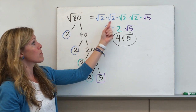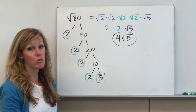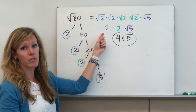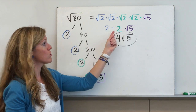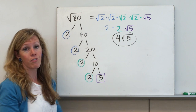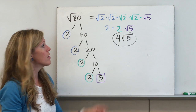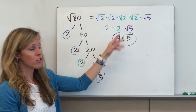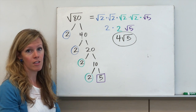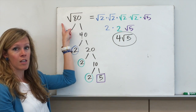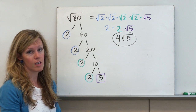Now we know the square root of 2 times the square root of 2 is 2. Because the square root of 2 times the square root of 2 equals the square root of 4, which is 2. So radical 2 times radical 2 is 2, and again radical 2 times radical 2 is 2. Then we have radical 5 — it didn't have a pair, so it stays under the radical symbol. This is all multiplication, so 2 times 2 is 4. We have 4 radical 5, and that's the simplified answer to radical 80 — a nice, precise way to write it without rounding.